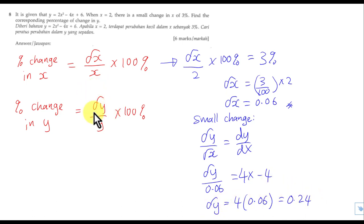Now I have the change of Y. In order to get this percentage change in Y, I need to know the original value of Y. I will just substitute the 2 back into the original equation. My Y is basically 2 times 2 squared minus 4 times 2 plus 6, which is 8 minus 8 plus 6. So my Y is 6. Now I know my original value of Y is 6.